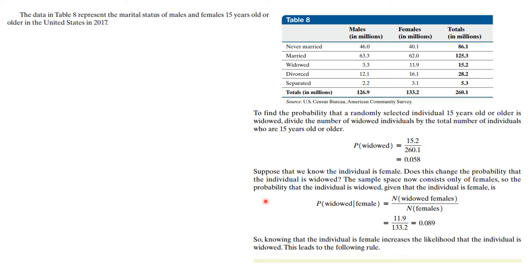So you see, knowing the condition really does change things. This is conditional probability — knowing that we're talking about females gives a different number. It's not independent. Let's use this to formulate the definition of conditional probability: if E and F are any two events, then the probability of F given E is the probability of E and F divided by the probability of E. In terms of counts in a table, that's the number in E and F divided by the number in E — which is exactly what I did with females and widows.